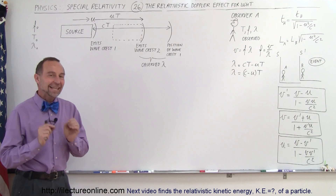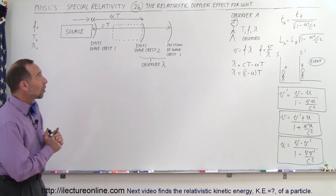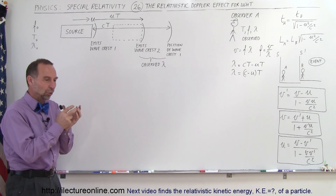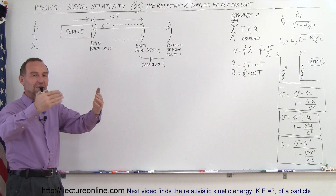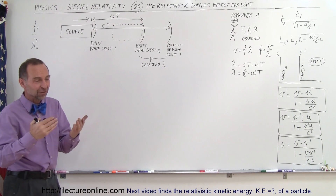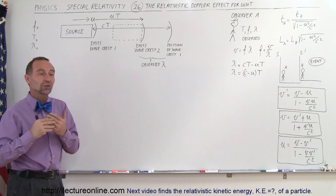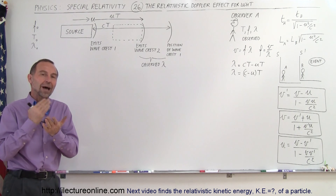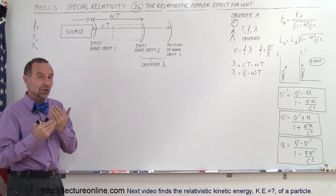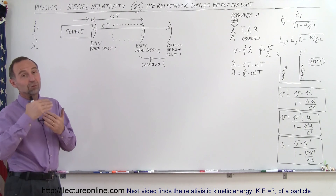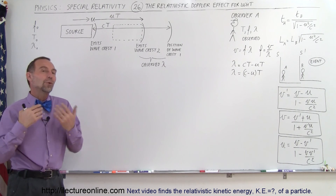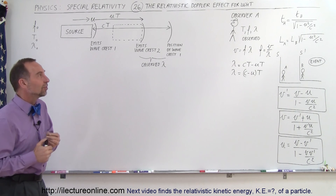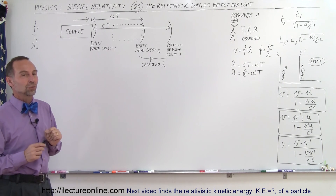Welcome to iElectronLine. The next topic we're going to attack is what we call the relativistic Doppler effect when it comes to light. We have a source somewhere out in space that's traveling towards us or maybe away from us, giving off electromagnetic radiation, and we see the Doppler effect in that. If it's approaching us, the light will be blue shifted; when it's moving away from us, the light will be red shifted. How big will that shift be? What will be the change in frequency?